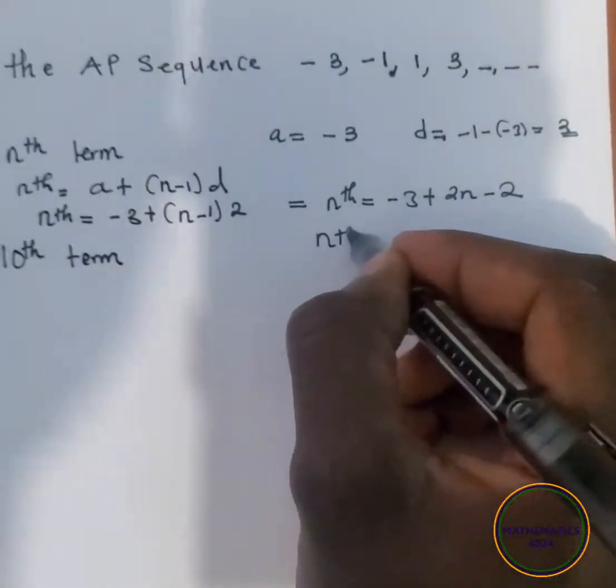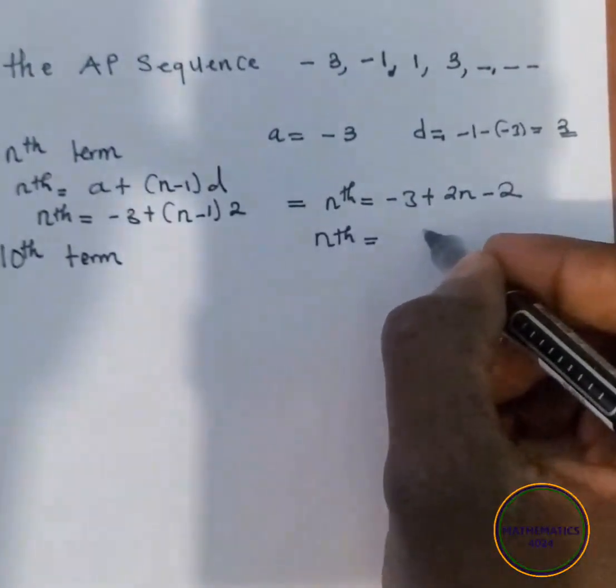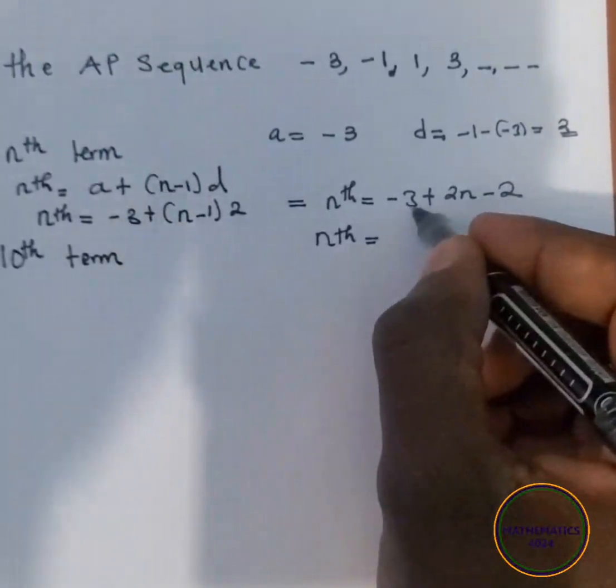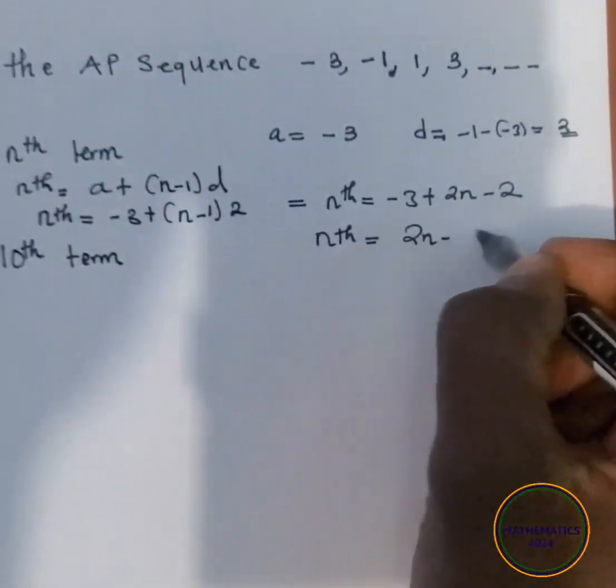So your nth term is equal to, this and this will get negative 5, which will be 2n minus 5.